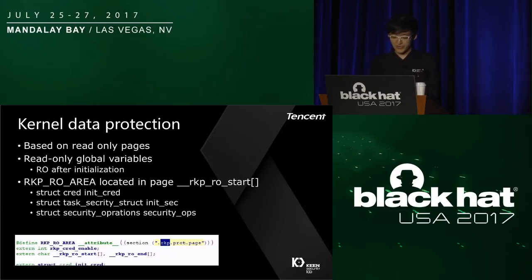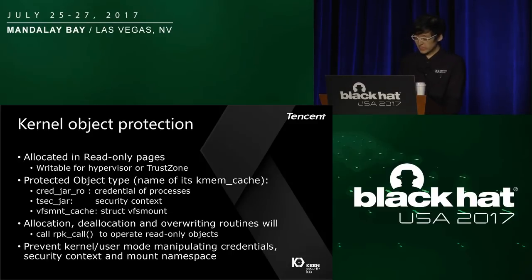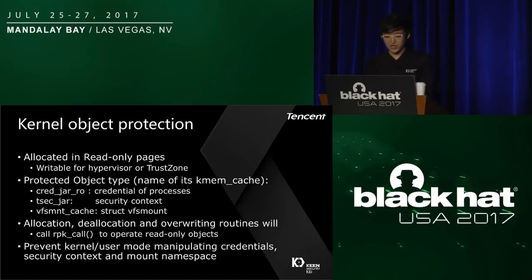The last protection is kernel object protection. Kernel objects in the heap can also be protected by RKP. Linux uses slab heap management, and every type of object may have a kmem_cache as its allocator. Three types of objects and their kmem_cache are protected: cred_jar_ro, representing the process credential; tsec_jar, representing the process security context; and vfs_mount_cache, representing the process mount namespace. They are all read-only in kernel space and only writable from the secure world.